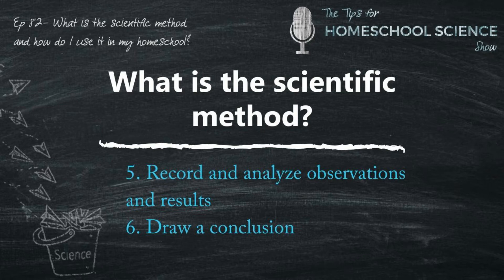Next, why is the scientific method so important? The scientific method is important for the homeschooler to teach because it's a fundamental process in science. But the benefits of teaching your student this process will go beyond their science class. Not only is it important in science, but it's also a technique that trains a student how to answer a question in a logical manner — to analyze and process the information he or she is receiving.